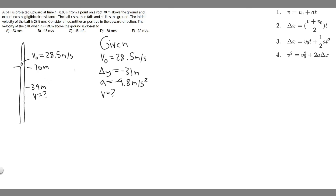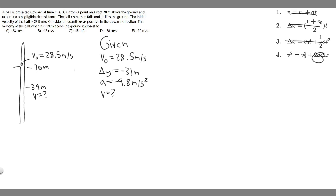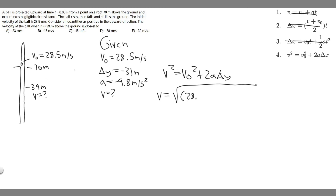What we want to do is use one of the kinematic equations to solve for v. The first three equations all contain t, so we can't use those. But the equation v² = v₀² + 2a·Δy has v₀, delta y (delta x in this case, but they're interchangeable), and a — so we can solve for v. Taking the square root of both sides: v equals the square root of 28.5 squared plus 2 times negative 9.8 times negative 31. When you compute that, you get 37.68 meters per second.